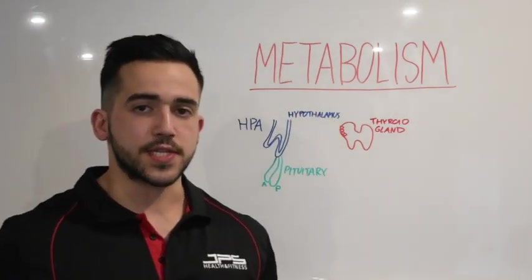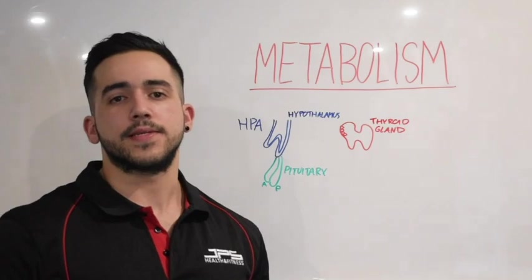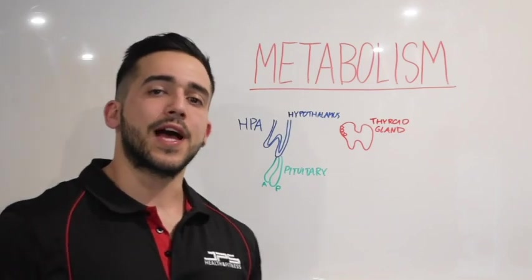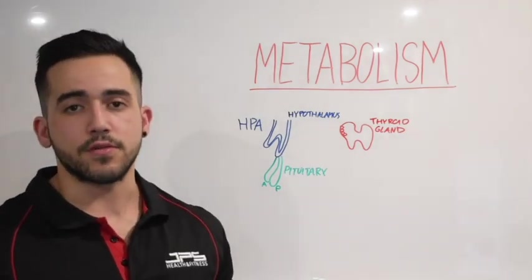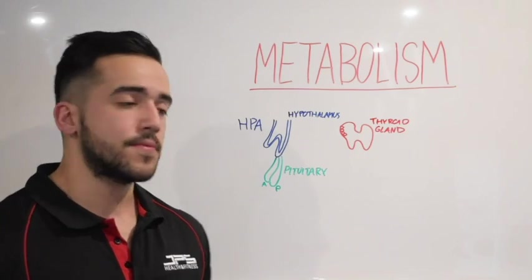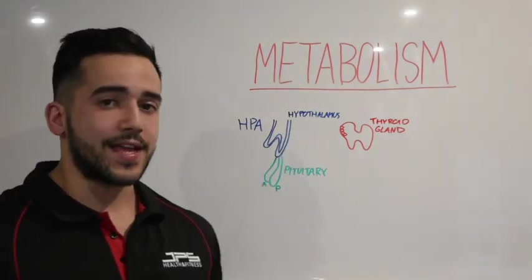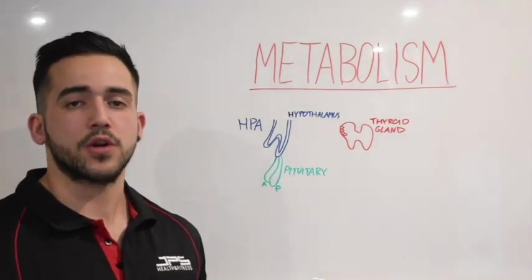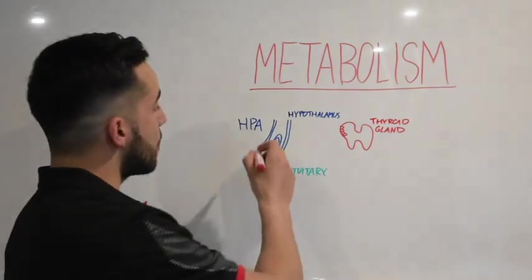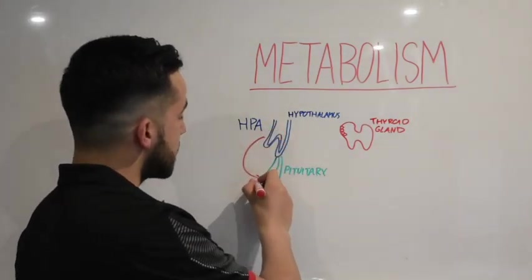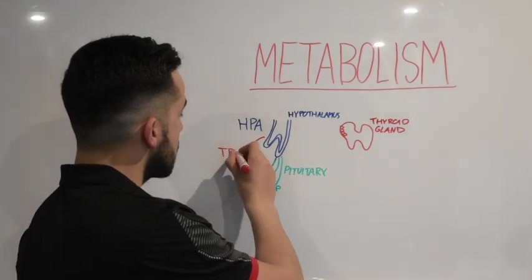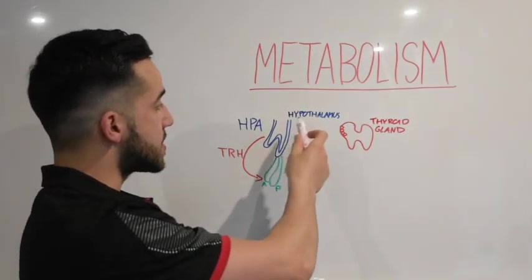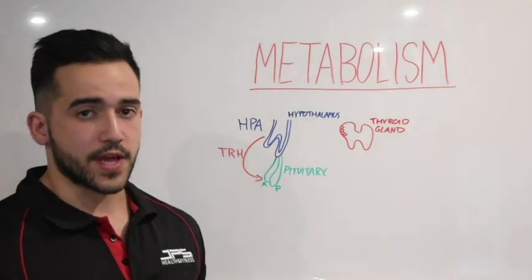The hypothalamus registers certain signals — things like your nutritional status, your sleep status, and certain hormone levels. It will send out the required signal based on the stimuli it is registering, and it will send the initial signal to the anterior pituitary gland. This signal is called thyrotropin-releasing hormone, or TRH — a hormone released from the hypothalamus to the anterior pituitary — and it kick-starts the cascade of signals to allow the hypothalamus to send required information to the thyroid gland.